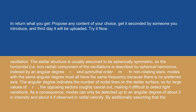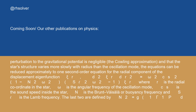As a consequence, modes can only be detected up to an angular degree of about 3 in intensity and about 4 if observed in radial velocity. By additionally assuming that the perturbation to the gravitational potential is negligible — the Cowling approximation — and that the star's structure varies more slowly with radius than the oscillation mode, the equations can be reduced approximately to one second-order equation for the radial component of the displacement eigenfunction ψ_r.